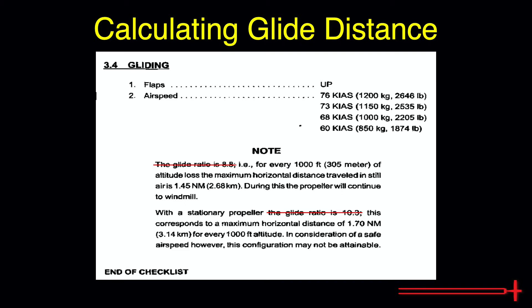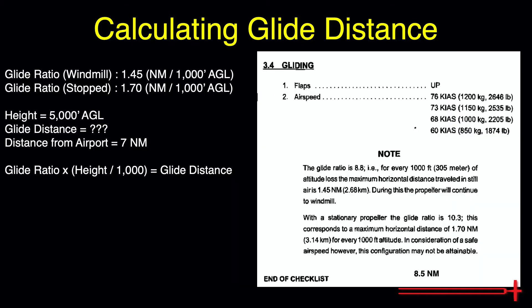Rather than set my glide ratio up foot for foot, I prefer to find how many nautical miles I will travel per 1,000 feet of altitude above obstacles, as I have never measured my distance to an airport in feet. Fortunately, Diamond has listed these ratios on this page as well. With the prop windmilling, the maximum glide ratio is 1.45 nautical miles for every 1,000 foot of altitude loss. With the prop stationary, the maximum glide ratio is a bit higher at 1.7 nautical miles for every 1,000 feet.